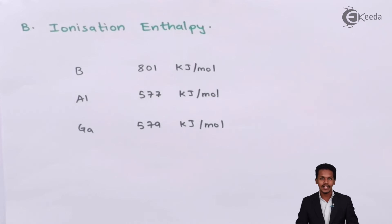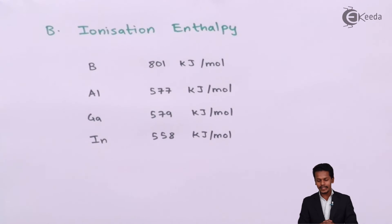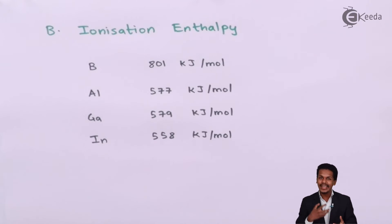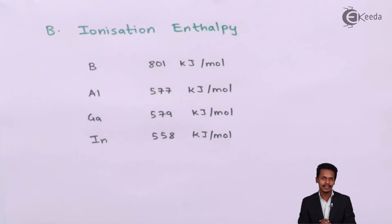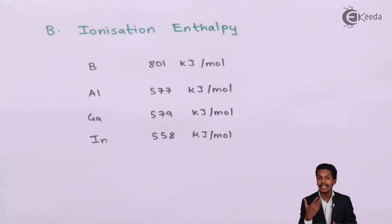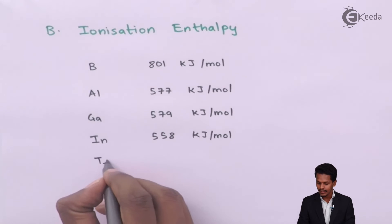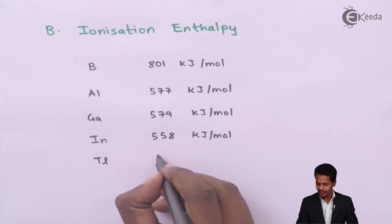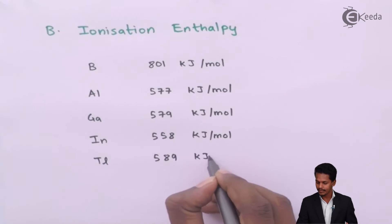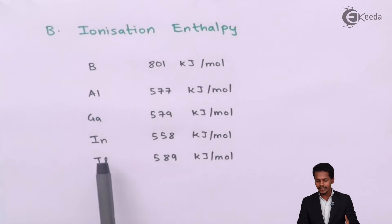For Indium, comparing it with Gallium's ionization enthalpy, Indium has a lower ionization enthalpy, meaning we need to give less energy to remove the outermost electron. This is because in a regular manner, as we move from top to bottom, the ionization enthalpy decreases. Now for Thallium, it has been found to be 589 kJ/mol, and comparing it with Indium, the ionization enthalpy increases for Thallium.